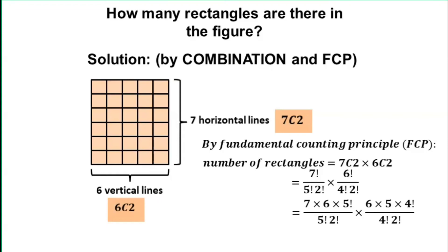Notice that in 7 factorial and 6 factorial, we stopped expanding up to 5 factorial and 4 factorial, respectively. Since we also have 5 factorial and 4 factorial in the denominators, we can cancel them out. So, it will leave us with this one.